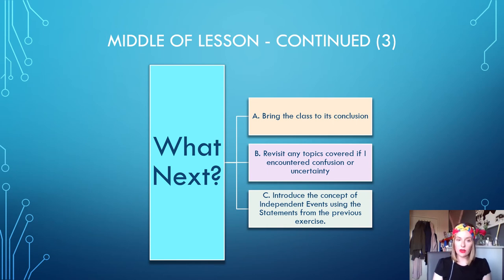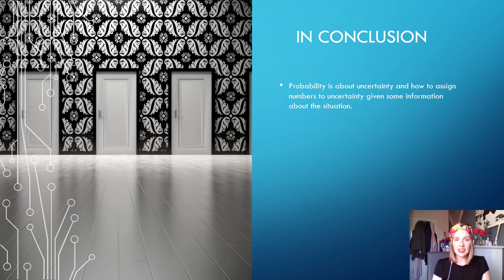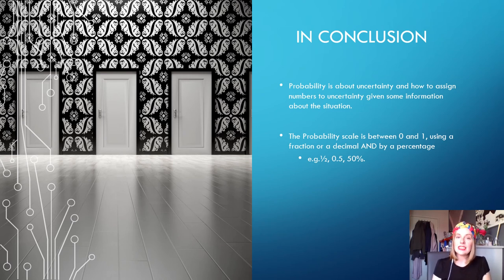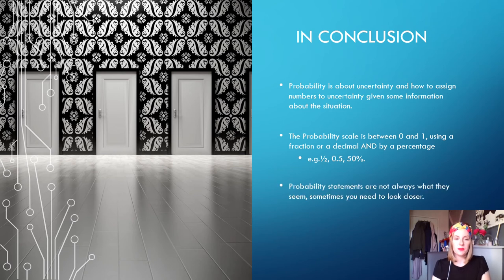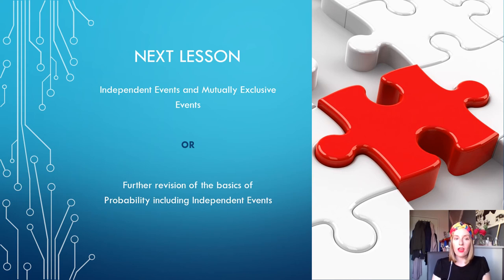If time allowed I would have a number of activities ready for choice C. I would conclude the class by summarizing what we have covered. Probability is about uncertainty and assigning a measurement to that uncertainty. Probability can be measured on a scale between 0 and 1 in a decimal or a fraction or by using a percentage. Probability statements are not always what they seem and sometimes you need to look a little closer. Not everything in maths is certain. I would then briefly introduce what we will cover in the next lesson based on the outcome of the final activity. Either we would introduce independent events and mutually exclusive events or further review the basics of probability including independent events.